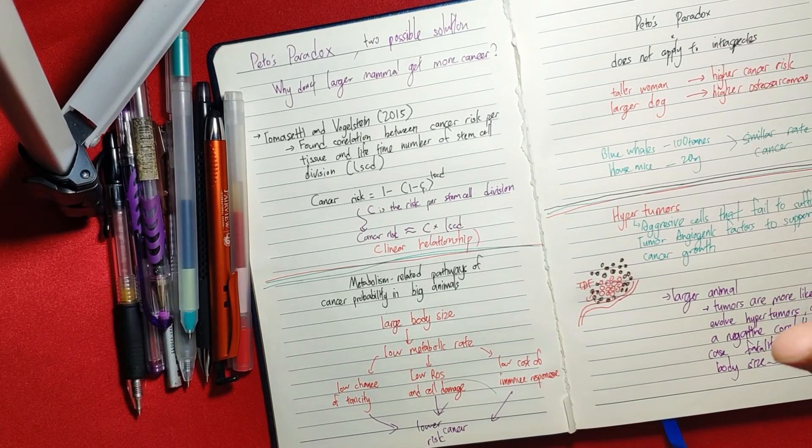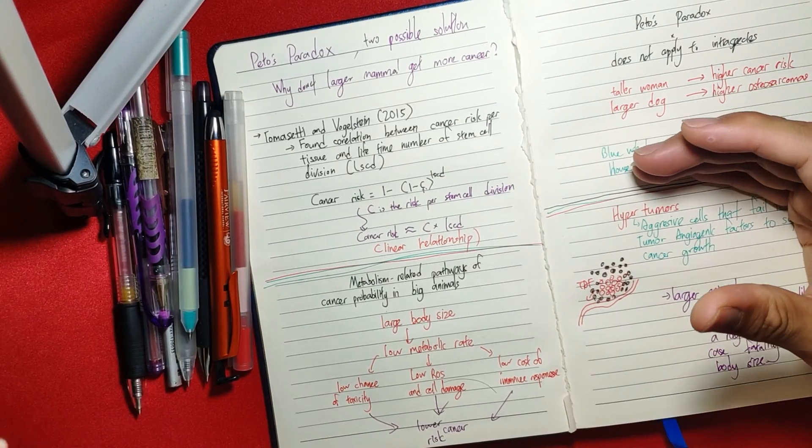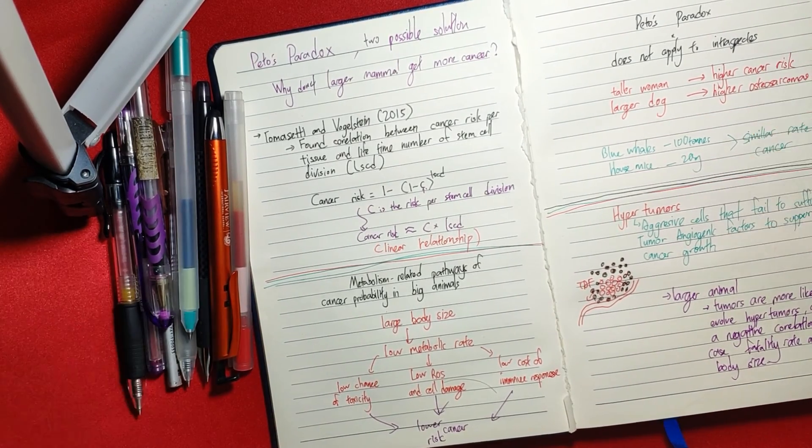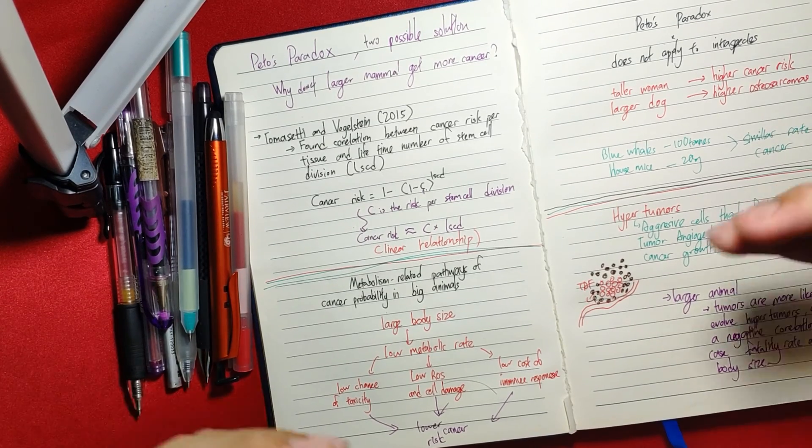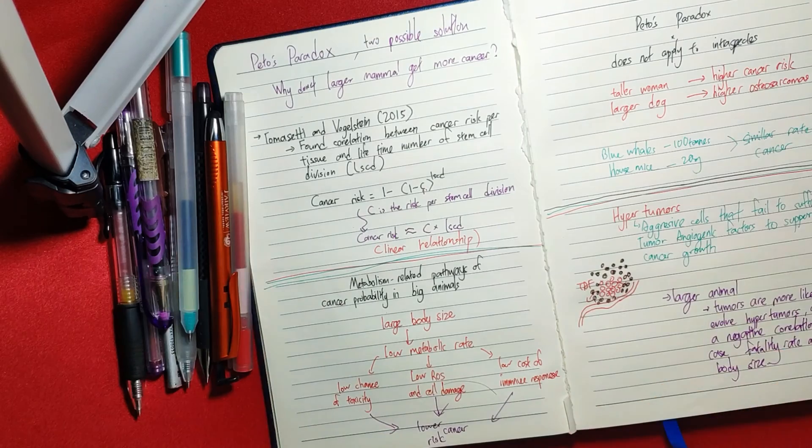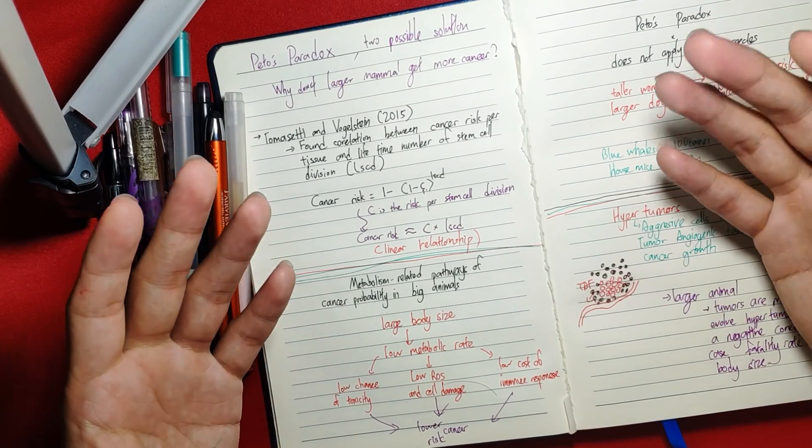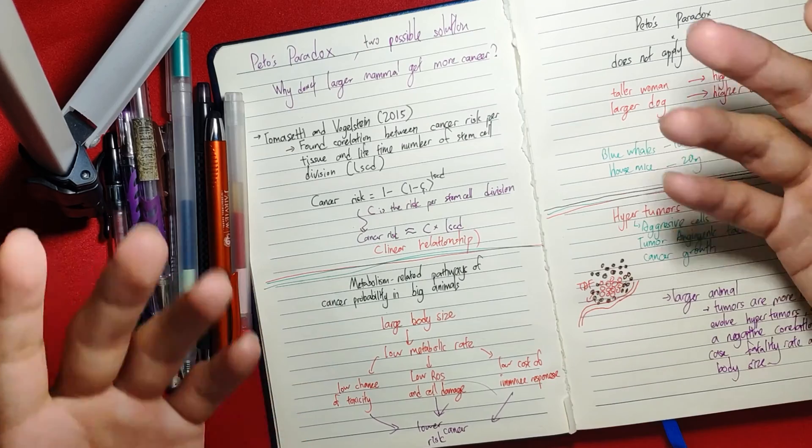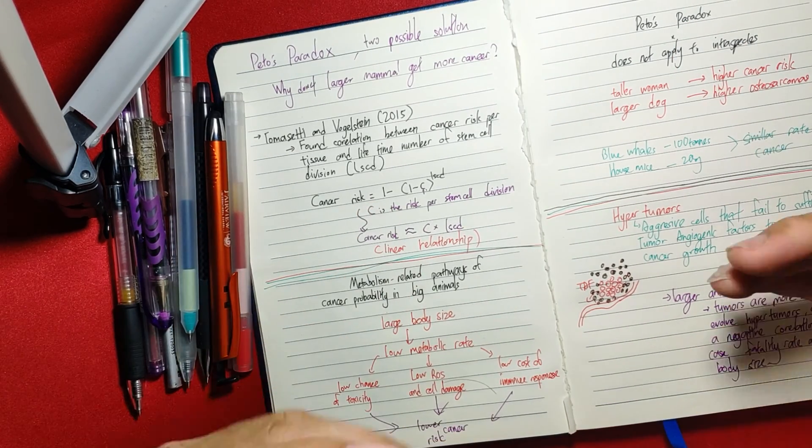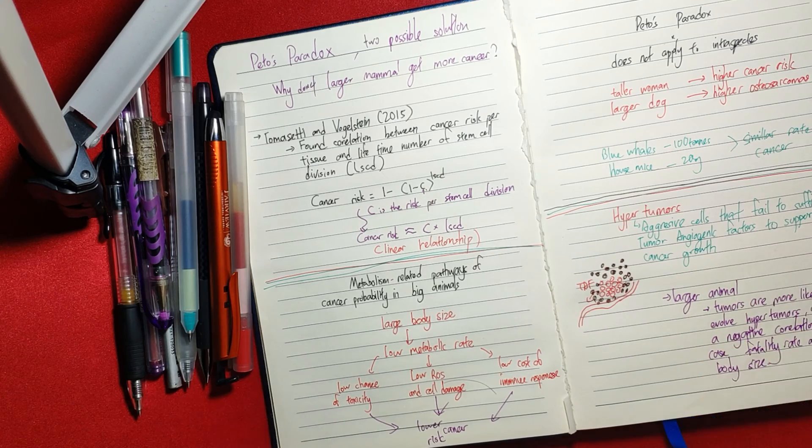Before that, let's go to Tomasetti and Vogelstein, which is what I explained just now. They have a very nice equation where they found the correlation between tumors per tissue and lifetime number of stem cell divisions. Basically, you have more cell divisions, there's a high chance that you introduce more errors, and the chances actually increase exponentially.